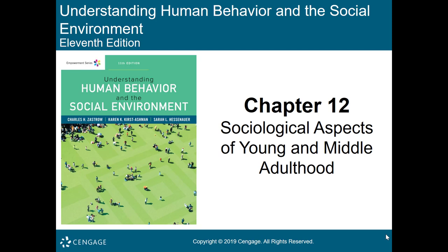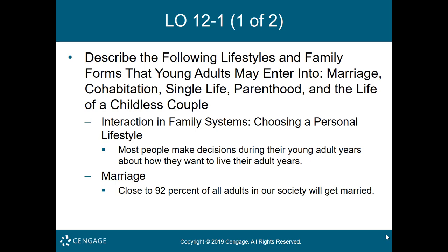This week we're covering Chapter 12: Sociological Aspects of Young and Middle Adulthood. Learning Objective One is to describe the following lifestyles and family forms that young adults may enter into, such as marriage, cohabitation, single life, parenthood, and the life of a childless couple. Most people make decisions during their young adult years about whether and where they want to live as an adult, including whether to marry or stay single, whether to have children, what kind of career to pursue, and what area of the country they may want to live in.